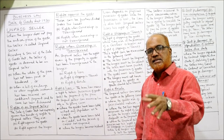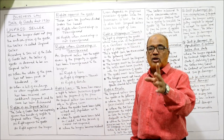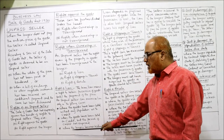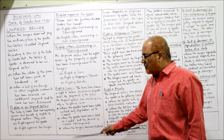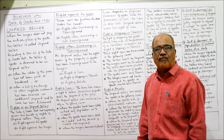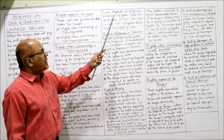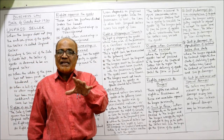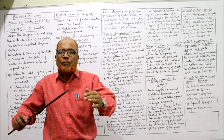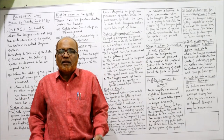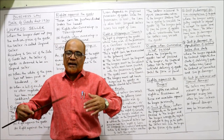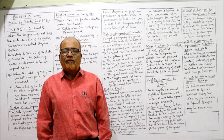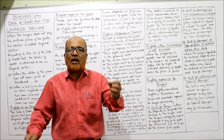Lien depends on the physical possession of the goods. Once the possession is lost, the lien is also lost. So the unpaid seller loses his right of lien if possession has been given to the buyer. For example, if I have sold the goods and along with ownership I have already transferred possession to the buyer, then I lose the right of lien.